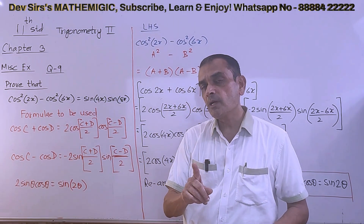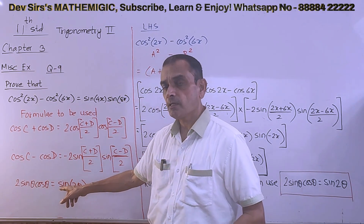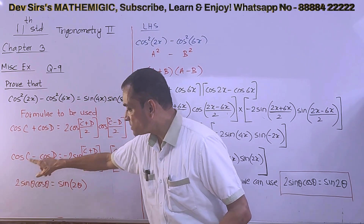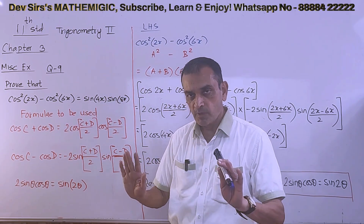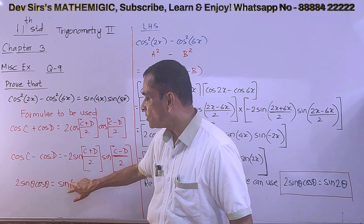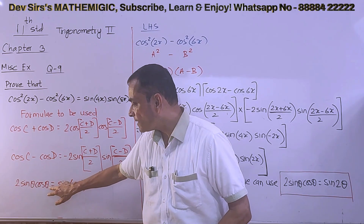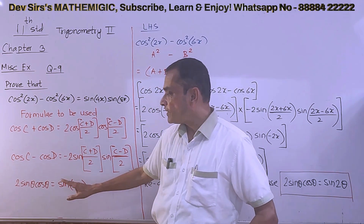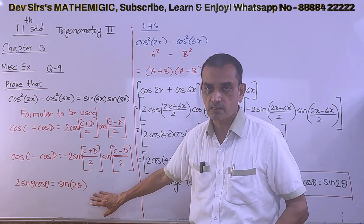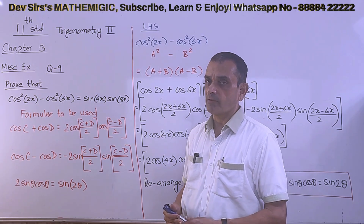One more formula we have seen earlier: 2 sin theta cos theta is sin 2 theta. The 2 goes inside and you get sin of 2 theta — the cos disappears and the angle gets doubled. So to remember: if you get 2 sin x cos x, you are going to get sin 2x. These are the formulae we are going to use.